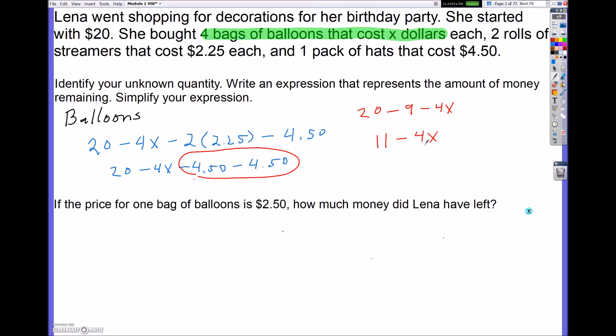Now since this has a variable, the 4x, and this does not, it's a constant, we cannot combine them any further. So where it says simplify the expression, that is this part right here, and I can no longer simplify it.